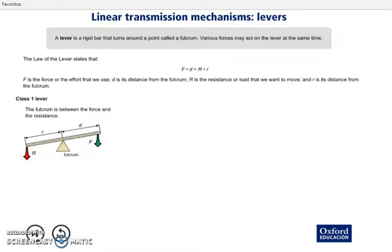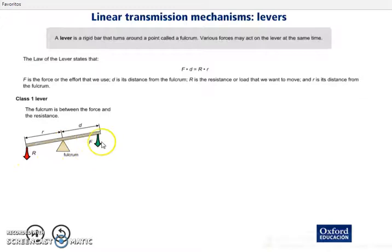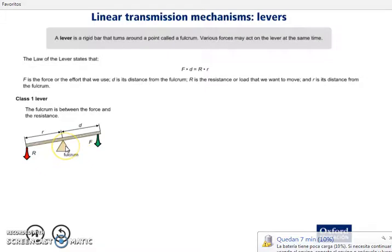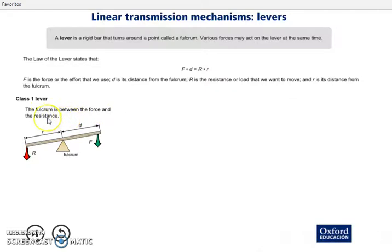We have three different types of levers, depending on which element is in between. First class lever: we have the resistance, the fulcrum, and the force. Which element is in between? The fulcrum. So, when the fulcrum is between the force and the resistance, we have a lever of first class.